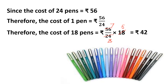So, the unitary method is very easy. Understand it again: the cost of 24 pens equals Rs. 56 — that is given to you. According to the unitary method, we find the cost of 1 pen by dividing 56 by 24. Then we find the cost of 18 pens by multiplying that result by 18. So, 56 divided by 24, multiplied by 18, gives us Rs. 42.